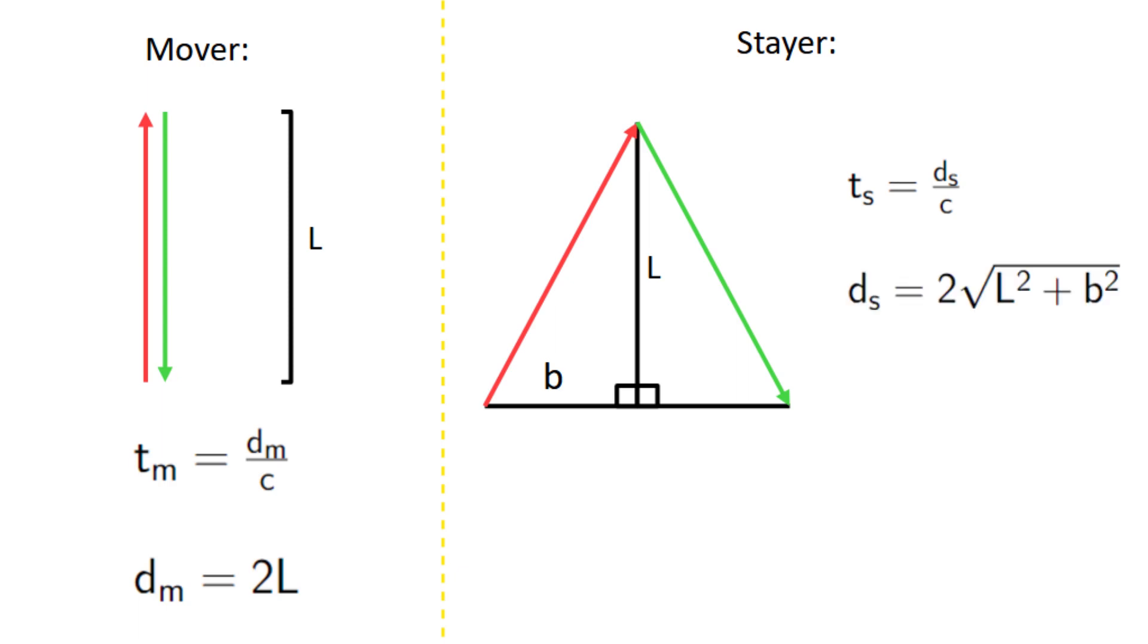So the length of the full path is just two times this. But what is b? Well, it's half of this distance, which we'll call a. a is just the distance the ship travels, and the time it takes the photon to bounce back.